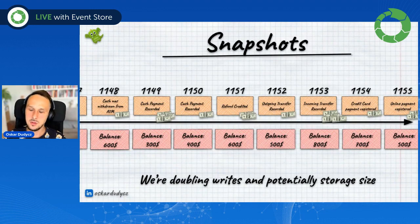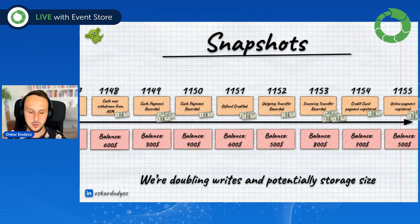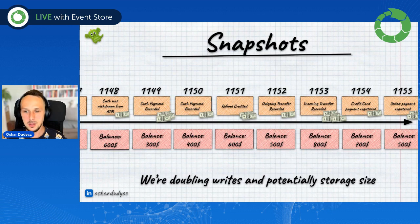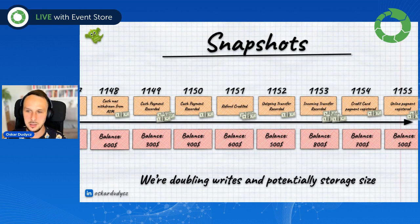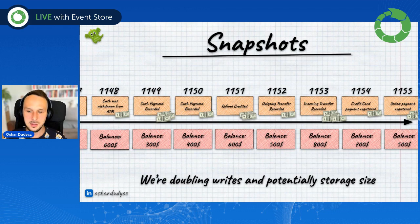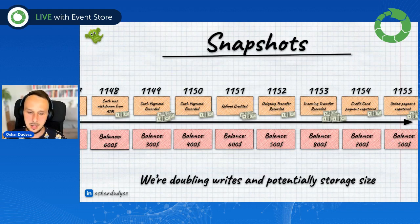So if we are storing a snapshot after each event, to be sure that we are fully optimizing our reads, then we are doubling writes, which might cause a lot of issues. Because we are optimizing for reading, but if we are doubling the storage size and doubling the amount of write operations, then undeniably our database usage will cost us much more.